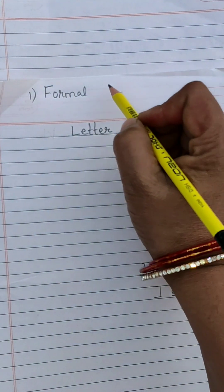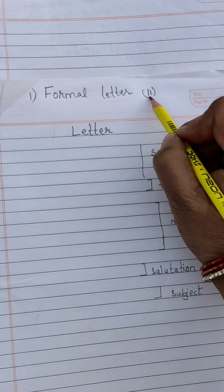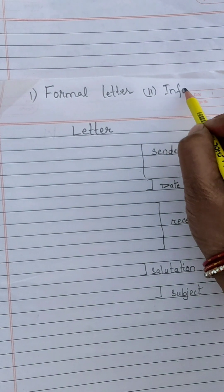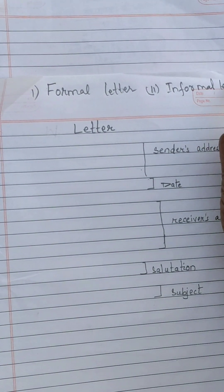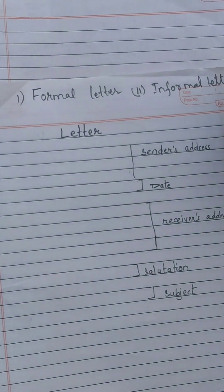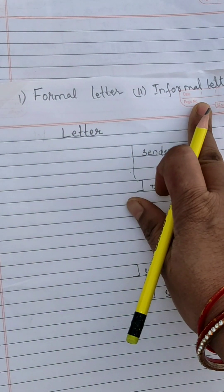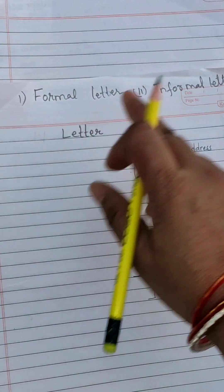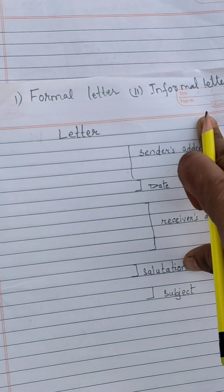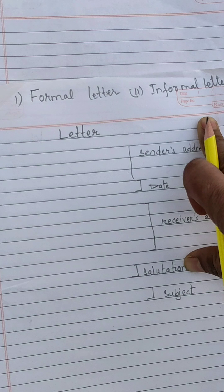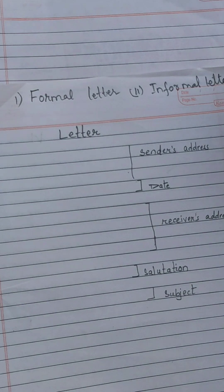One is formal letter and the other is informal letter. There are two types: formal and informal. Formal means what we give to an office — it is called a formal letter. What we give to our friends or family members is called an informal letter.